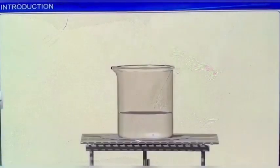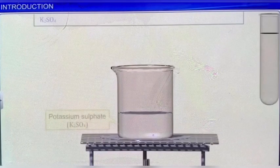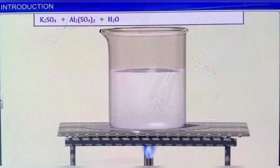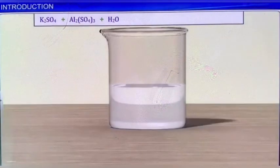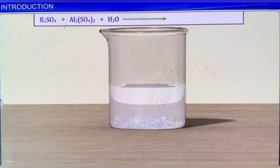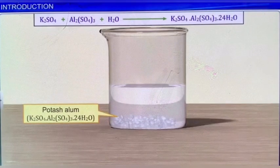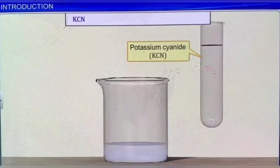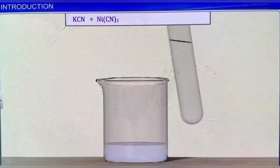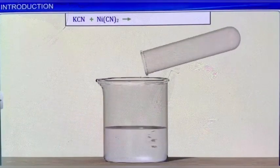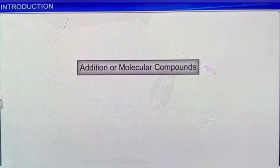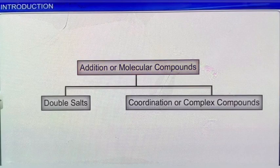For example, when saturated solutions of potassium sulfate and aluminium sulfate are mixed and heated till the crystallization point is reached, we get the well-known compound potash alum. Similarly, if we add a solution of potassium cyanide to a white precipitate of nickel cyanide, the precipitate immediately dissolves and a red-orange solution of a new compound is obtained. On the basis of their nature, addition or molecular compounds are divided into two categories: double salts and coordination or complex compounds.